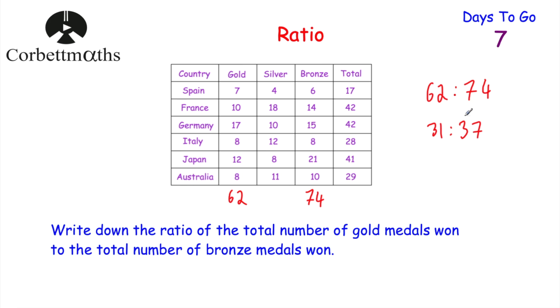So these countries won 62 gold medals and 74 bronze medals. The ratio is 62 to 74. They're both even, so let's divide them both by 2 — that gives us 31 to 37. This can't be cancelled down any further, so the ratio of gold medals to bronze medals is 31 to 37.